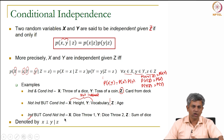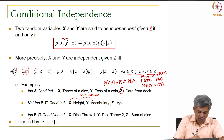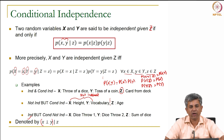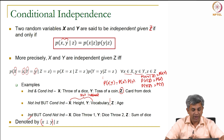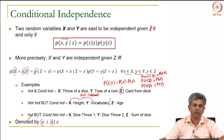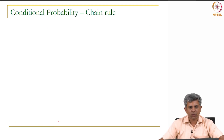The notation for conditional independence is X ⊥ Y | Z — X is independent of Y given Z.